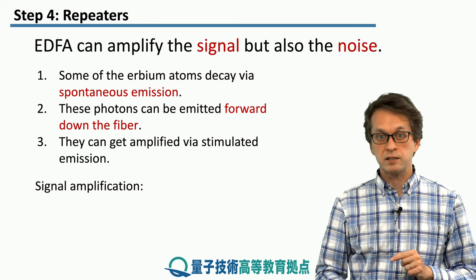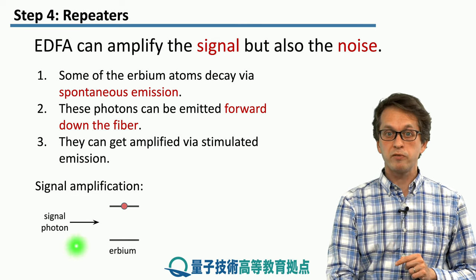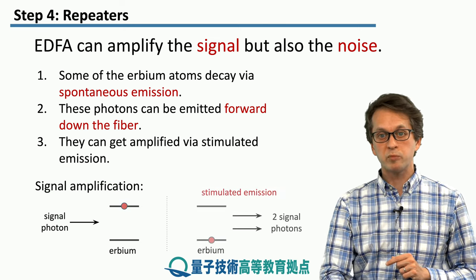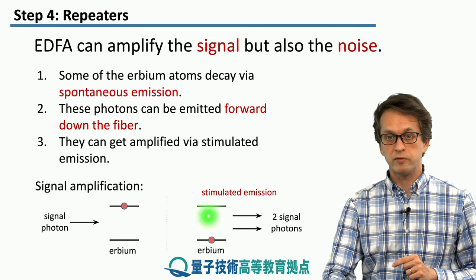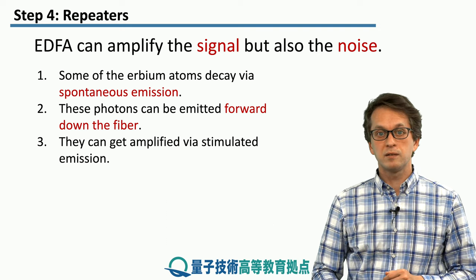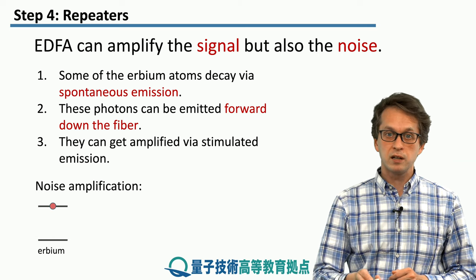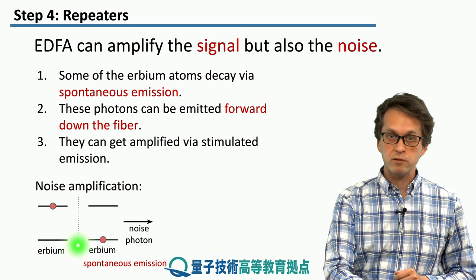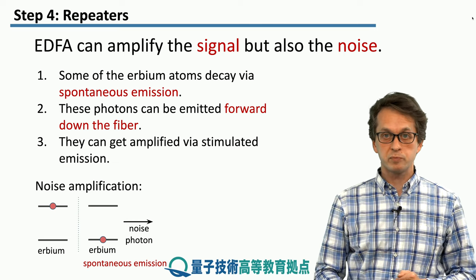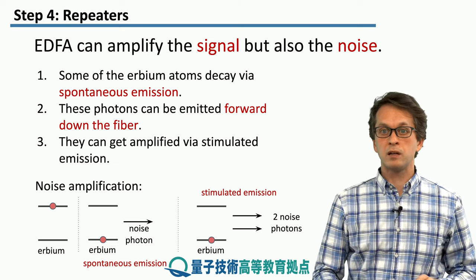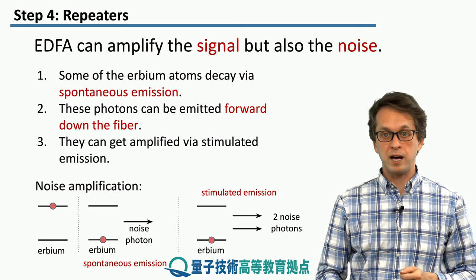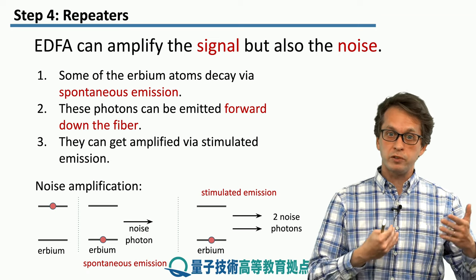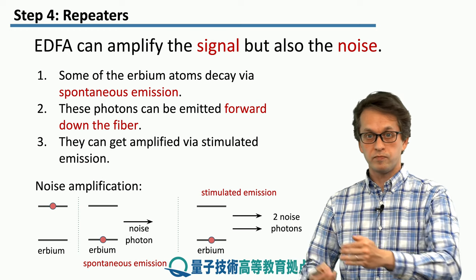So what's happening in the EDFAs is signal amplification, where the signal photon — the photon we want to amplify — comes in, stimulates emission from an excited erbium atom, and in the process becomes amplified. We then get two signal photons, which is good — which is what we want. But as we said, some of the erbium atoms decay spontaneously. This is how noise amplification occurs: an excited erbium atom decays spontaneously into its ground state, giving out one noise photon via spontaneous emission. That photon can then be amplified via stimulated emission from other excited erbium atoms, producing two noise photons. So what's very important is to consider the ratio of the amplified signal to the amplified noise.